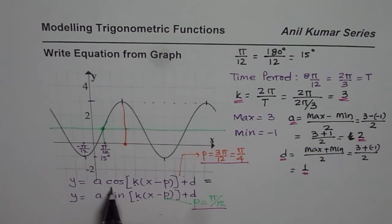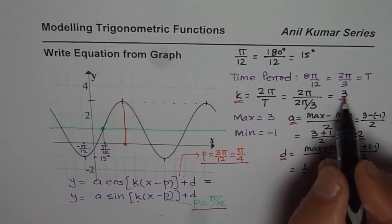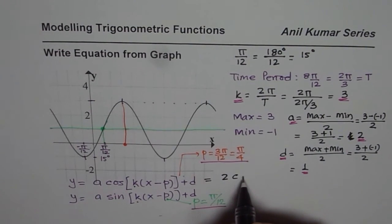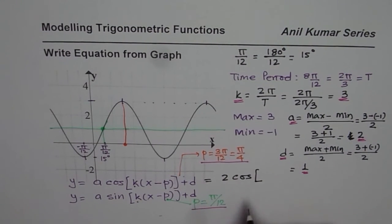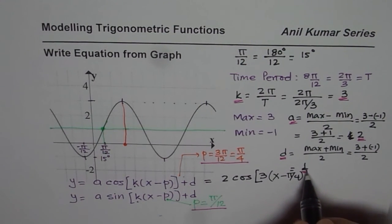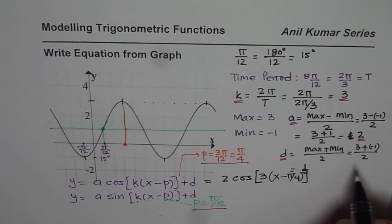Substituting these values, we get our equation. If you want to write in cosine function, a is 2, so we get 2·cos(3(x - π/4)) + 1. So we get cosine function.